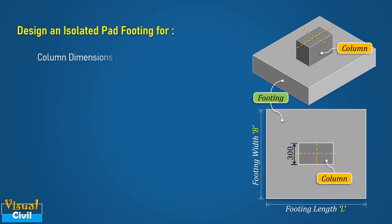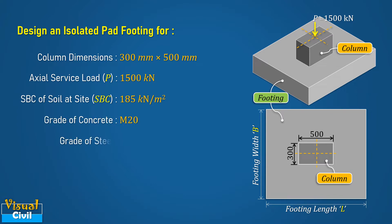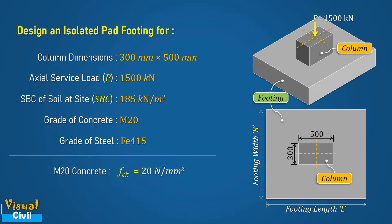Let us design an isolated pad footing for a column of size 300 mm by 500 mm, which transfers an axial service load of 1500 kilonewton. The safe bearing capacity of the soil at site is 185 kilonewton per meter square. The grade of concrete is M20 and the grade of steel is Fe415. The value of fck for M20 grade of concrete is 20 Newton per mm square and the value of fy for Fe415 steel is 415 Newton per mm square.